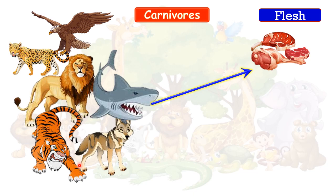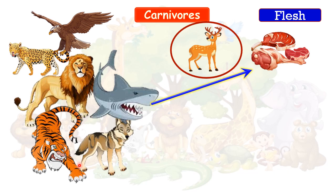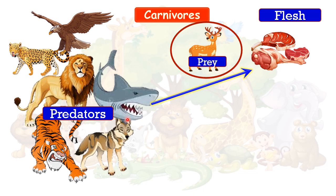These animals hunt and kill other animals to eat. Animals that hunt and kill other animals for eating are known as predators. The animals they hunt are known as prey. The animal that is killing is known as the predator, and the animal which is killed is known as prey.